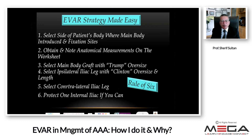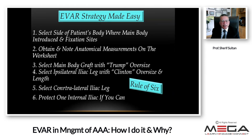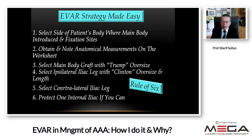The Rule of Six — EVAR strategy made easy. Select the side of the patient's body where the main body is introduced and the fixation side. Always try to get the minimum amount of body inside the patient. It's better to put two pieces rather than three, better three than four. The more connections you have, the more problems you'll have over the long term — that's for sure. Do not listen to anybody. The patient is yours and will be following you for the rest of his life, so you have to do it right the first time.